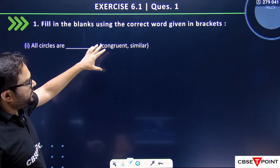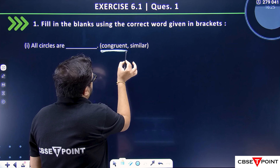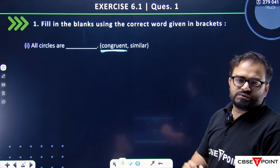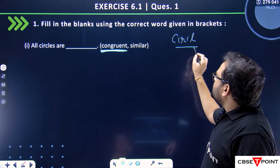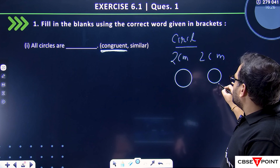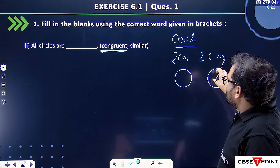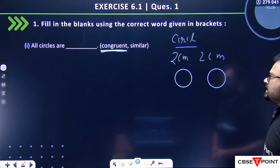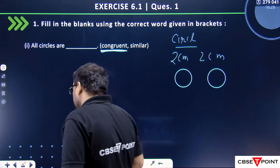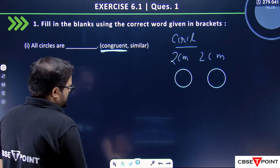All circles are congruent or similar. What is congruent? Congruent figures are figures that have the same size and same shape. If we try to overlap them, they will overlap completely. Suppose I make two circles, and both have a radius of 2 cm. If both radii are 2 cm, then if I take one circle and place it on the other, it will be a complete overlap — that means they are congruent. But for all circles, the radius is not always going to be 2 cm, so they will not be congruent.